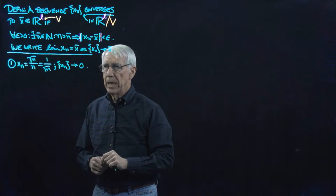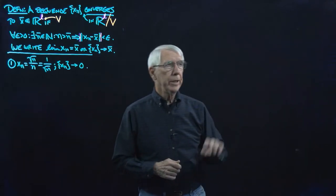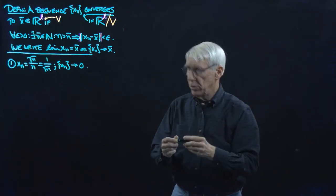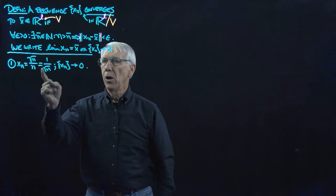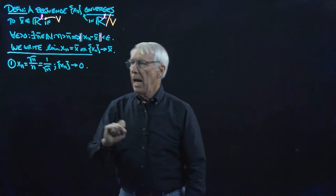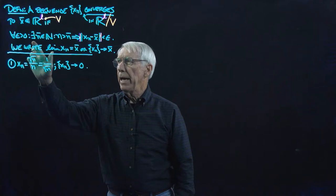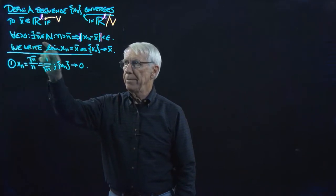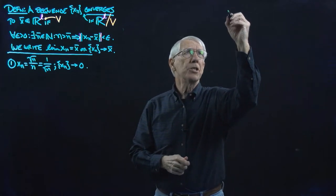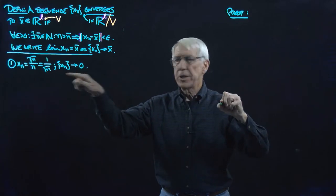Let's give a proof of that. Over here I'll write a proof that this converges to zero. And what I have to do is show — zero is playing the role of x̄ — and I need to show that for any epsilon I can find an N̄ that will do this. That's the key idea. So let's say proof, and we'll say: let epsilon be greater than zero.